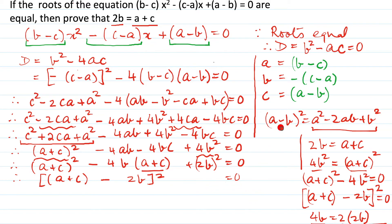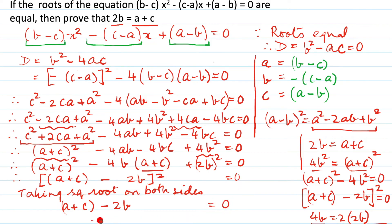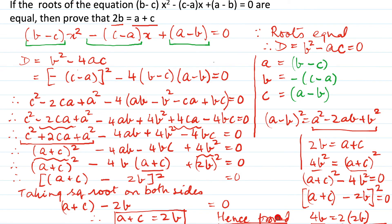This is because a squared minus 2ab plus b squared gives (a minus b) whole squared — a perfect square where the middle term is 2 into the two terms. So we take the square root on both sides. We have (a plus c minus 2b) equal to square root of 0, which is 0. Therefore a plus c equals 2b, and we have proved it. Hence proved.